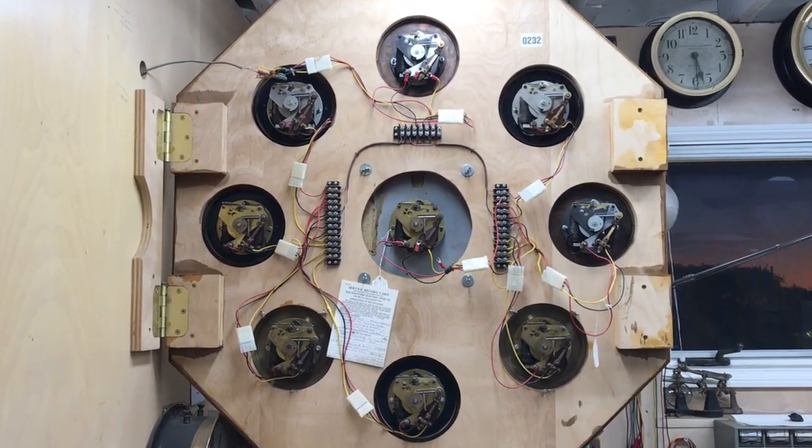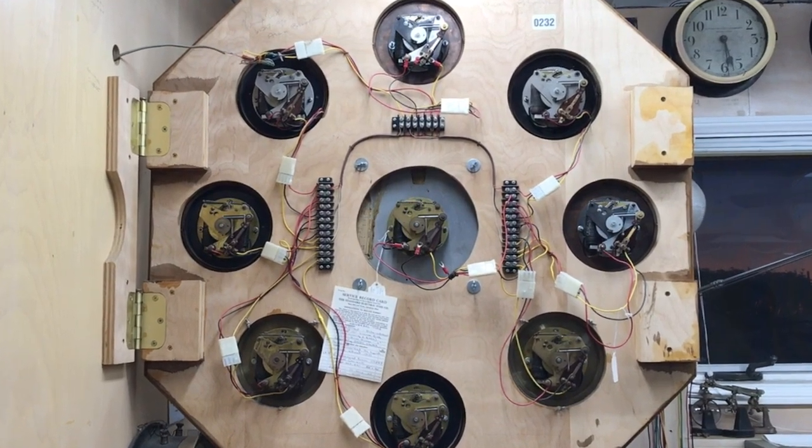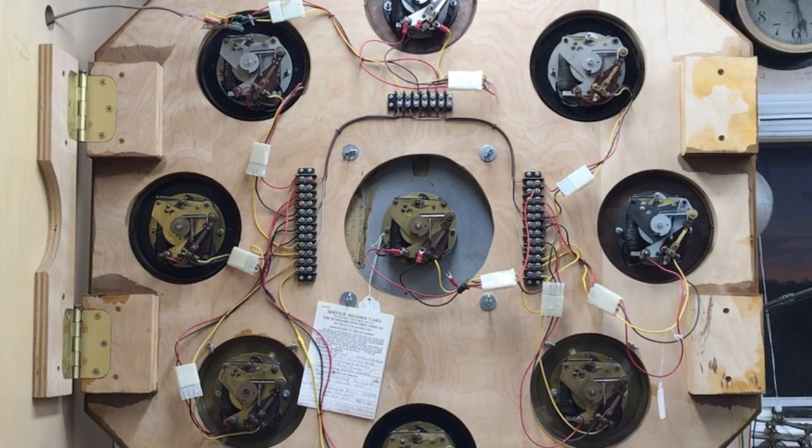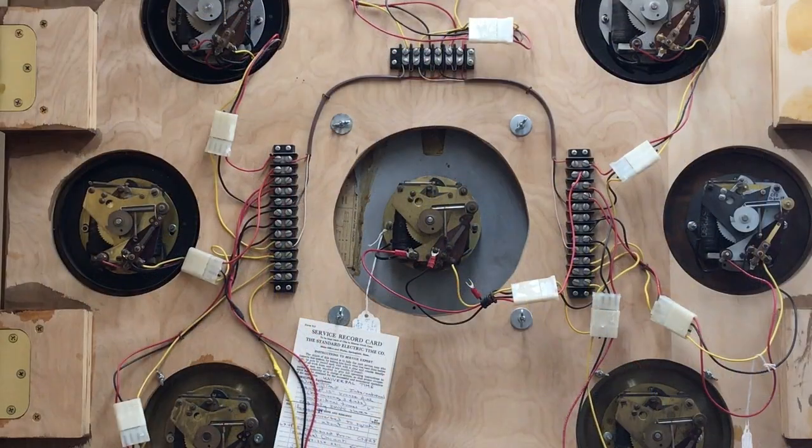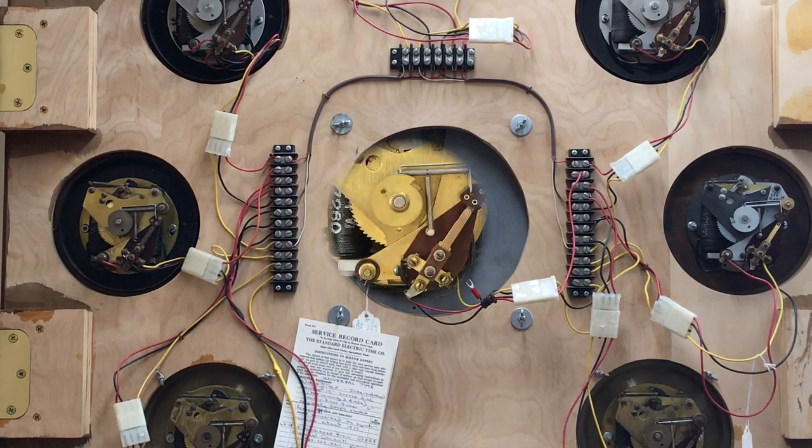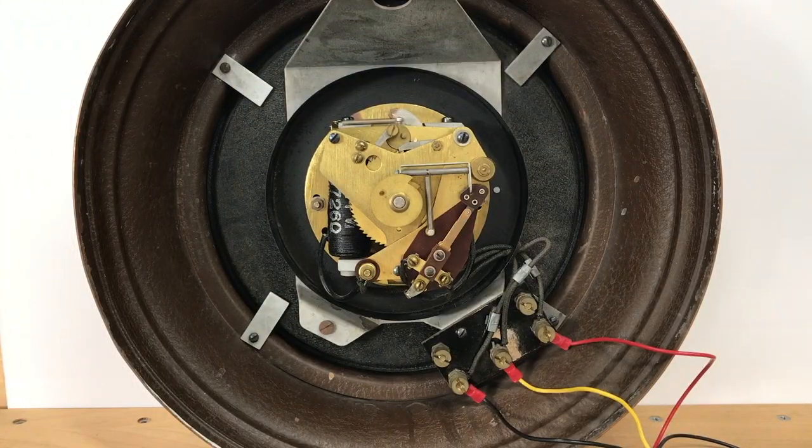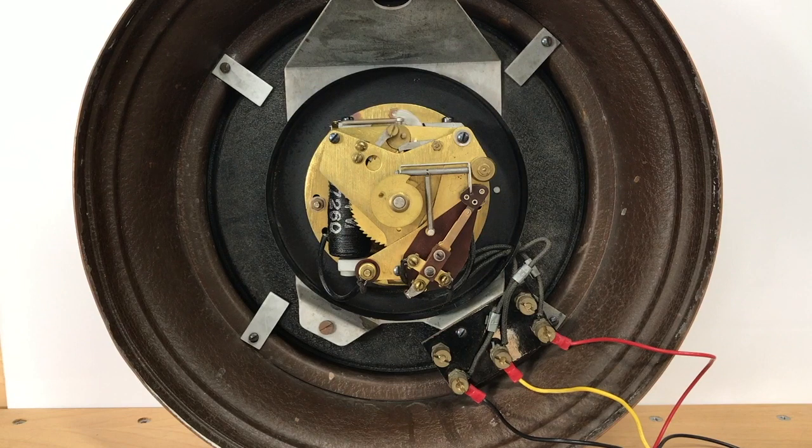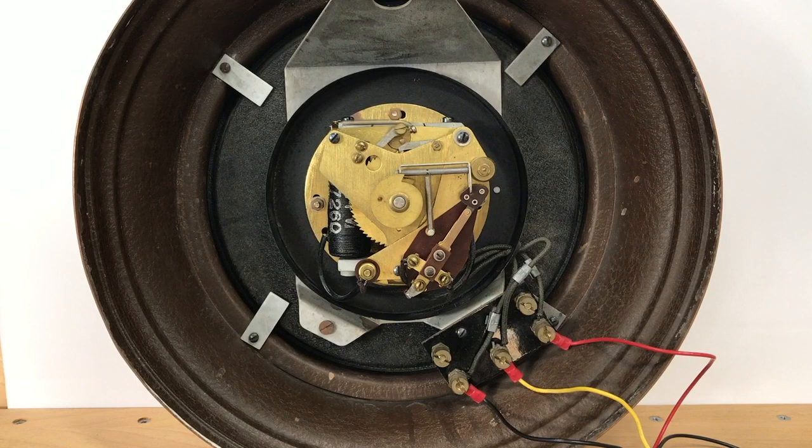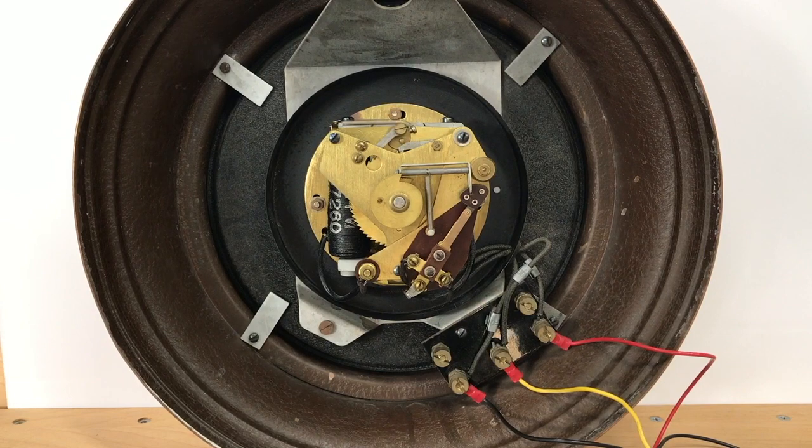These electromechanical clock systems are approaching a hundred years old and still operate flawlessly. I can just imagine how this correction feature must have been the best thing ever for installers and service people. All they had to do was get the slave to the correct hour and whether it was 10 minutes fast or 17 minutes slow, it would be correct at the next hour. This must have saved an inordinate amount of time.